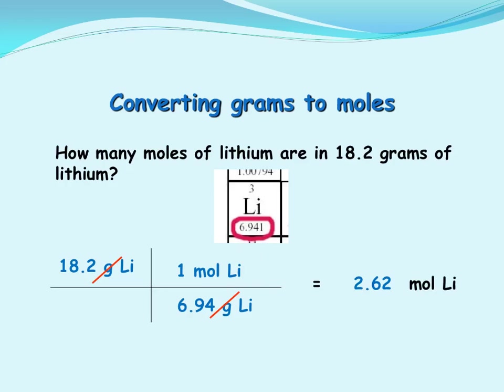In our second example, it's the reverse. This time, we are given 18.2 grams of lithium. And the question is, how many moles would that be? So we write down our given information in the first bracket. We cross-cancel our units, so we establish that grams of lithium will go in the bottom of the second bracket.